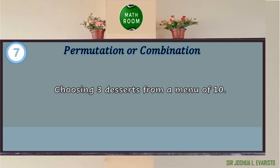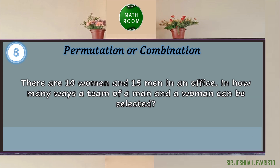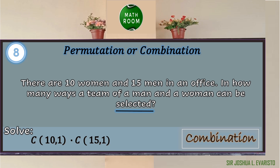Item 7: Choosing 3 desserts from a menu of 10. The keyword is 'choosing,' which makes it a combination, solved using C(10, 3). Item 8: There are 10 women and 15 men in an office. In how many ways can a team of one man and one woman be selected? The keyword is 'selected,' making it a combination question. It can be solved using C(10, 1) × C(15, 1), since we select 1 woman from 10 and 1 man from 15.